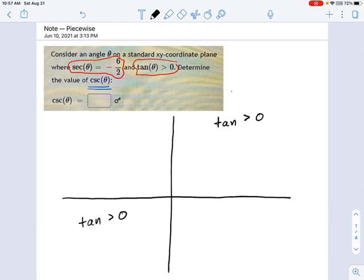Now where is the secant negative? Okay, think about that. Secant of theta, if that's going to be negative, then that also means, since, remember, secant is the reciprocal identity of cosine, secant and cosine are reciprocals. If secant is negative, that means cosine is negative.